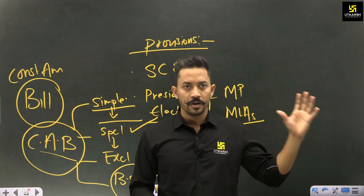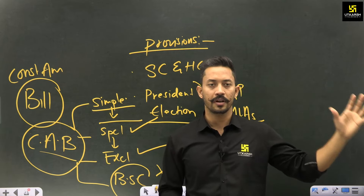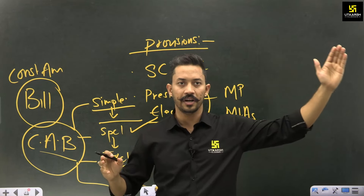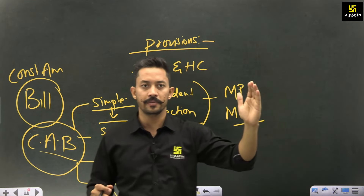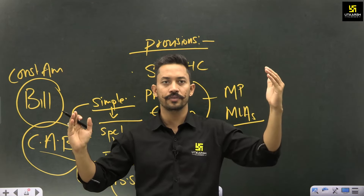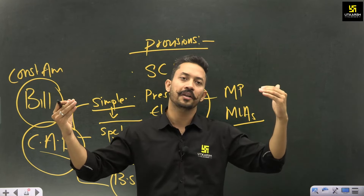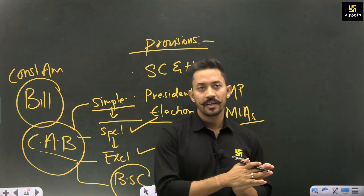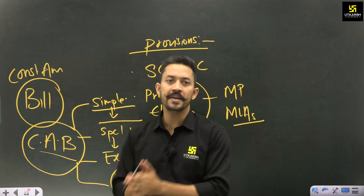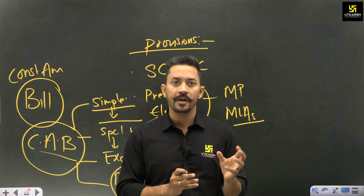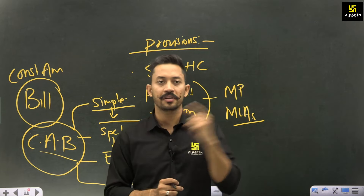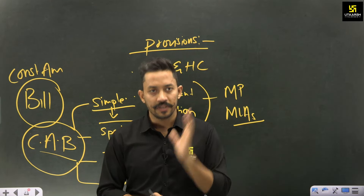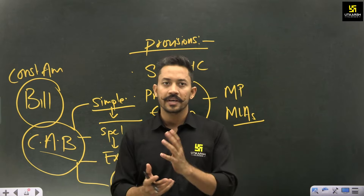I hope this topic — amendment of the Indian constitution — is now absolutely clear. To recap: the Indian constitution is an organic document; it has a blend of rigidity and flexibility; Article 368 governs amendments; some provisions can be changed outside 368 by simple majority; under Article 368, two types of majority are used — special majority for most provisions, and exclusive majority for state-interest provisions; the amendment power lies only with Parliament, representing the unitary bias in our quasi-federal structure. Thank you.